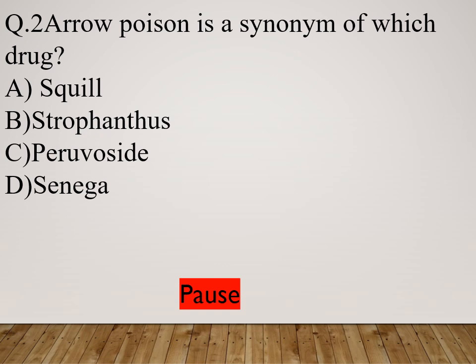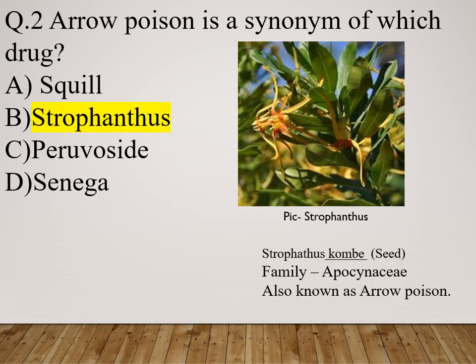Question 2: Arrow poison is a synonym of which drug? Option A: Squill. Option B: Strophanthus. Option C: Peruvocyte. Option D: Senega. The right answer is Strophanthus. The scientific name is Strophanthus kombé, family Apocynaceae. It is also known as arrow poison.